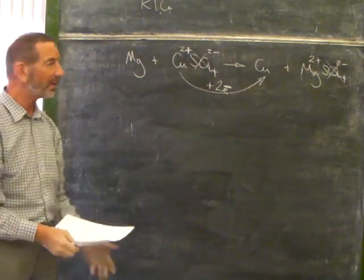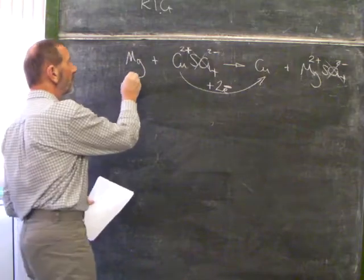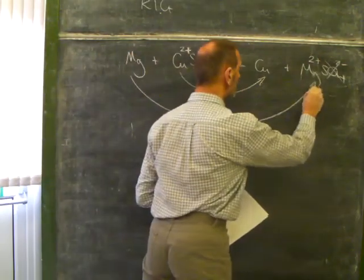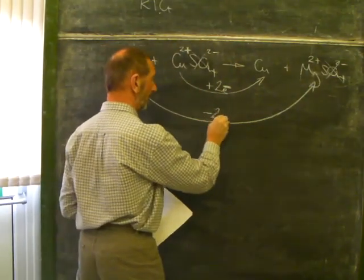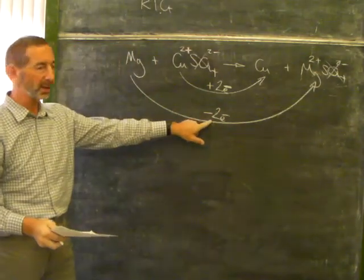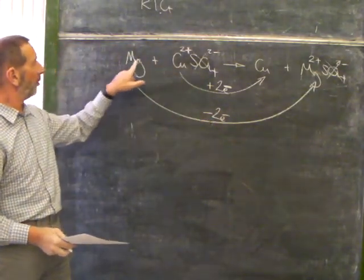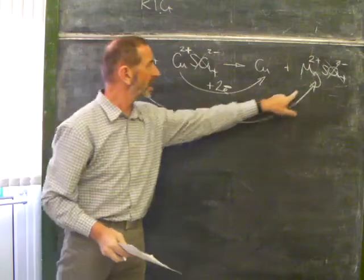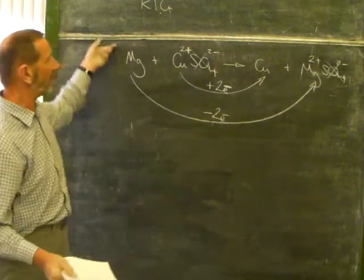Two negative electrons have cancelled out the 2 positive charge. But, of course, where do these electrons come from? The answer is the magnesium. The magnesium has lost electrons. As the magnesium loses electrons, the copper ions gain. When magnesium loses electrons, it forms a 2 plus ion. And there we have it.